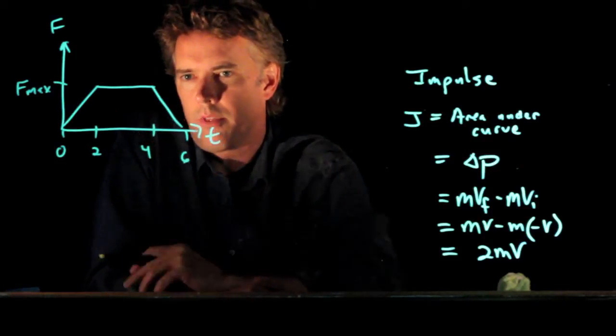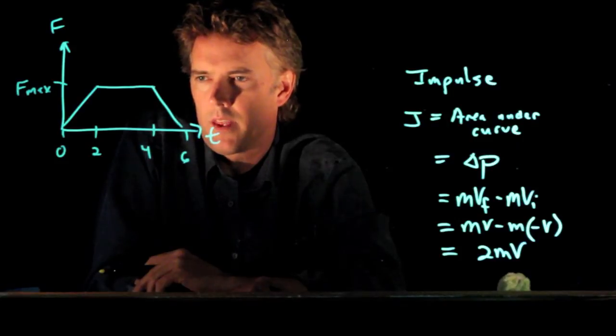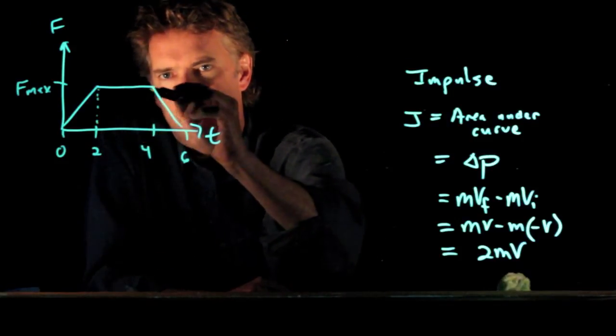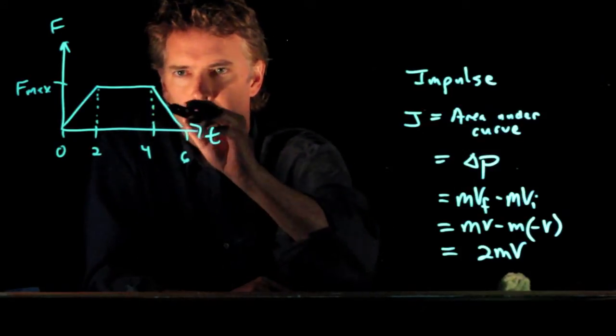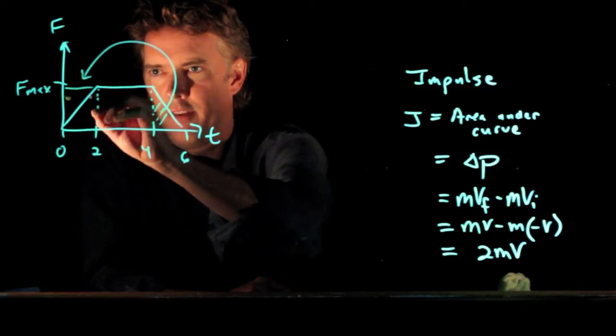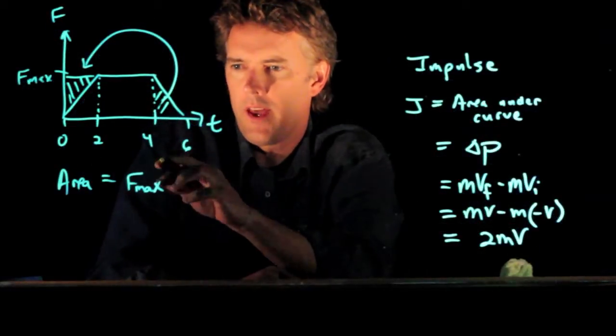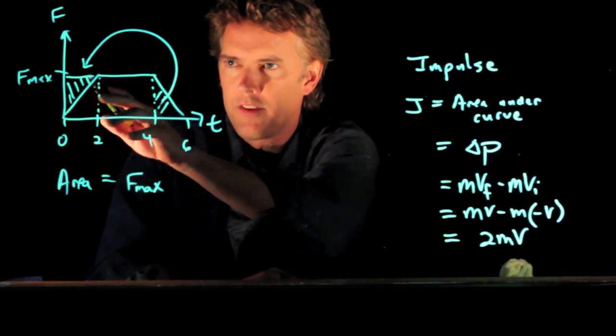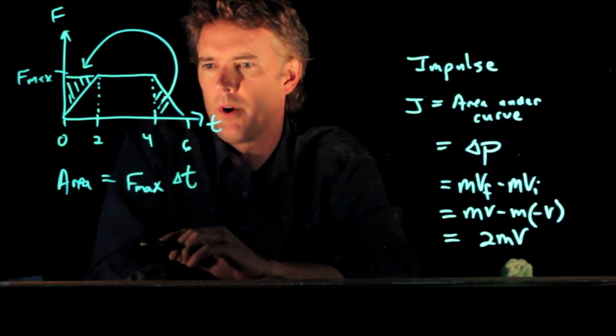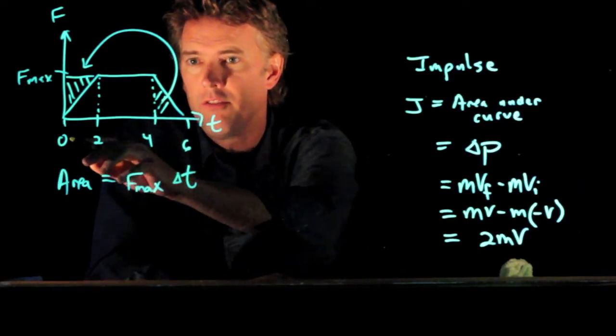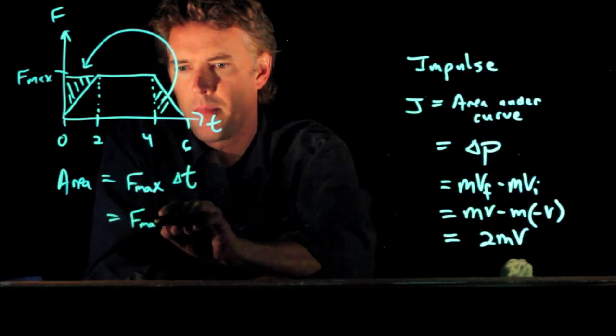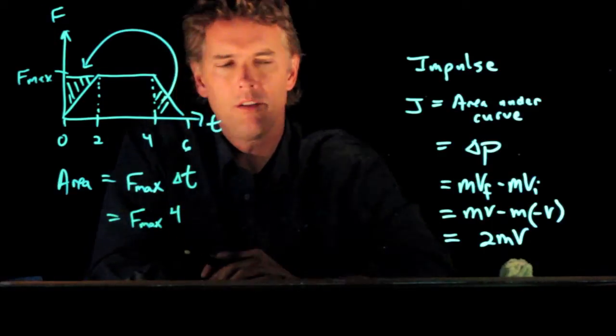Now, if I want to calculate the area under this whole thing, one thing that I notice is this first triangle is exactly the same as the last triangle. And so if I take this last triangle and move it over here, I can fill in this gap right here. Okay. So the area is just F max times delta T, where now delta T is going to be 0 to 4. All right. So we'll write this as F max times 4 seconds.